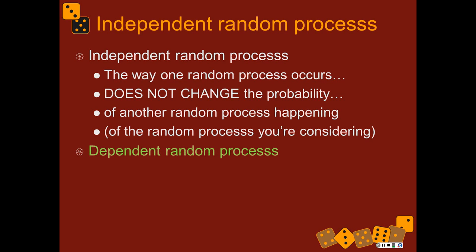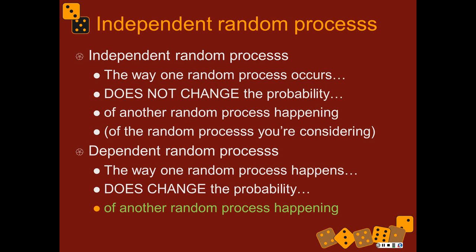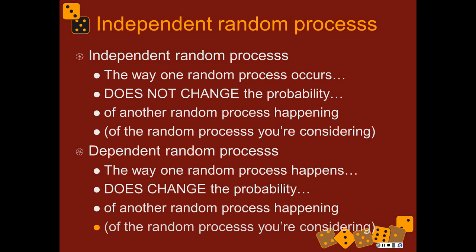A dependent set of random processes — dependent is the other alternative. It means the way one random process happens does change the probability of another random process happening. So independence is like a bunch of links of a chain that are all broken and not connected to each other. Dependence means things are linked together, so the probability of one thing is changed by the way another thing happens.